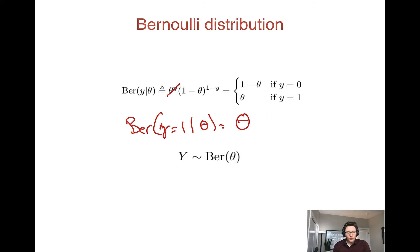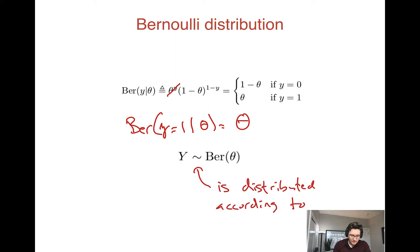In general, when we have some variable y — notice we've written y in uppercase to denote that y is a random variable — we use this tilde notation. This notation means y is distributed according to a Bernoulli with parameter theta.